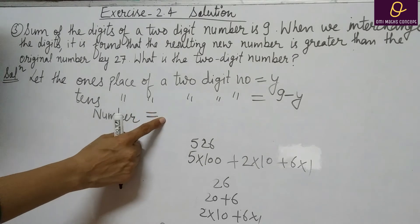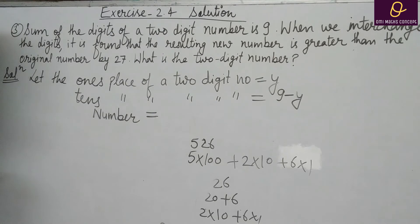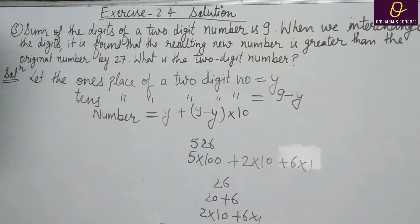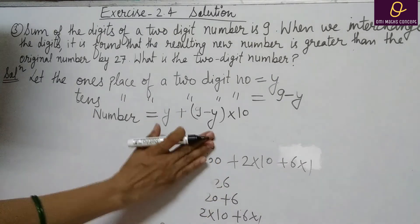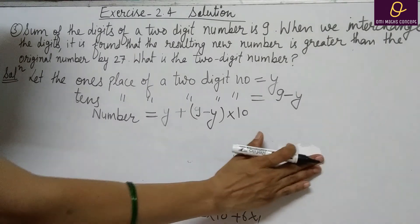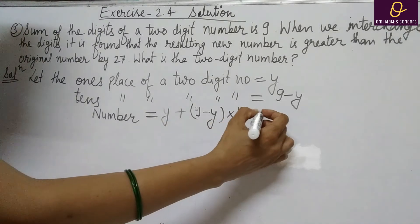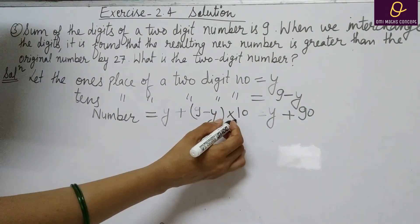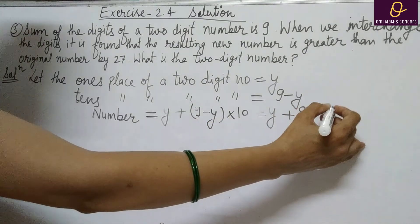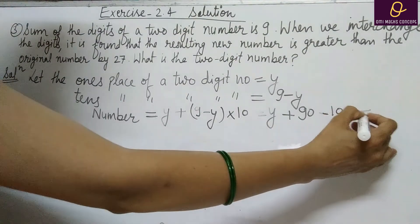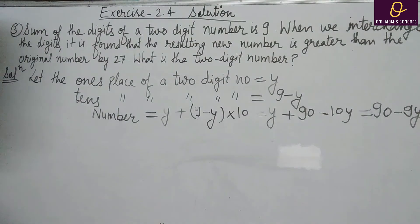तो यहाँ पे number क्या form होगा? 1s place को 1 से multiply करोगे, plus 10th place को 10 से multiply करिए. 10th place आपके पास 9 minus y है, तो (9 minus y) into 10. Distributive property: y plus 90 minus 10y, जो gives 90 minus 9y. यह आपके पास original number form हो गया.